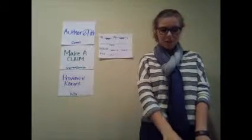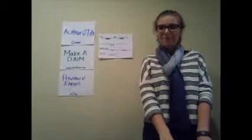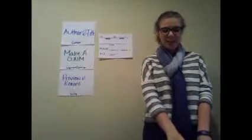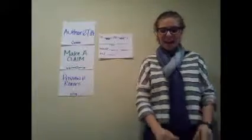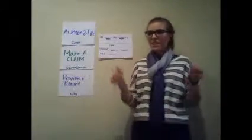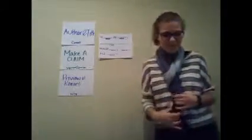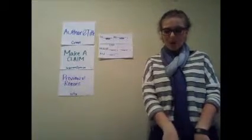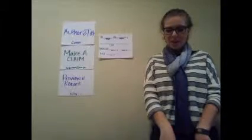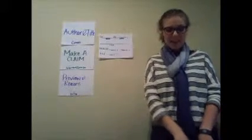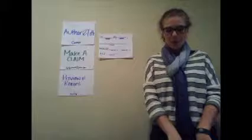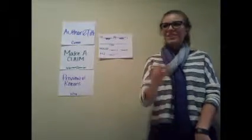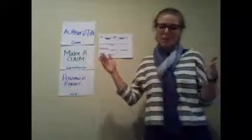The author and title are the first things, the first things, the first things. Author and title are the first things, and then we state our claim. Good. Next, let's try the second line. The claim tells the reader what I think, what I think, what I think. The claim tells the reader what I think about a topic. So we're going to say the topic is going to be our long word.